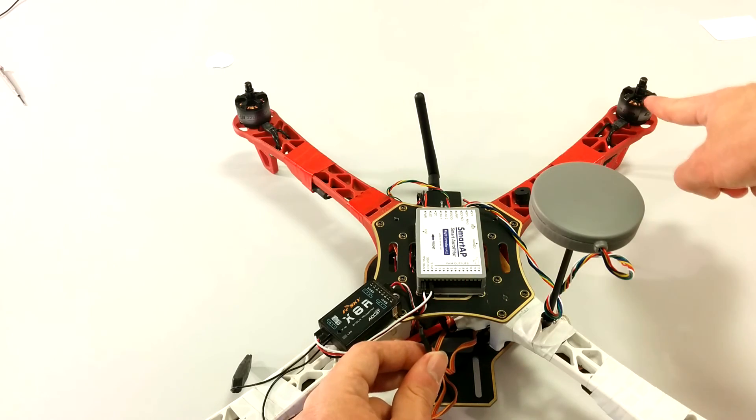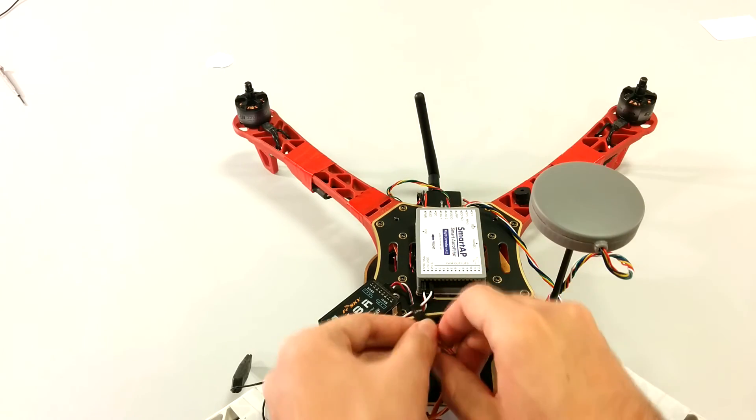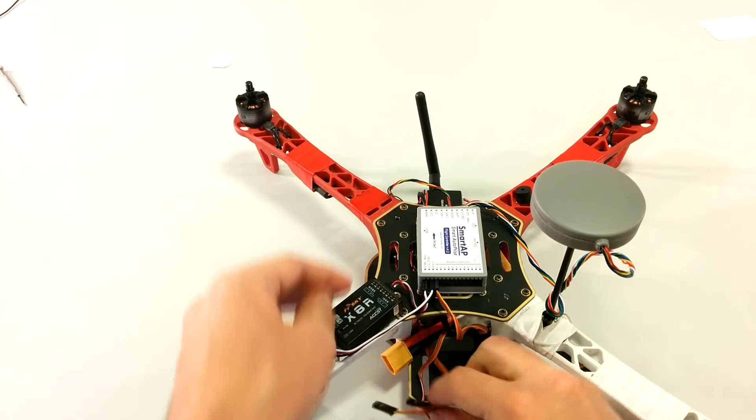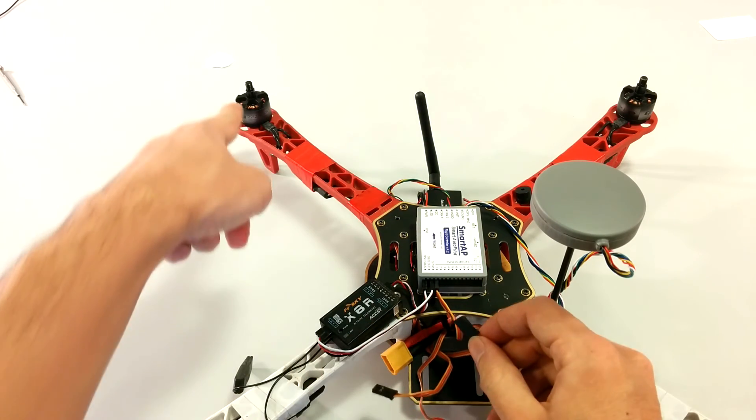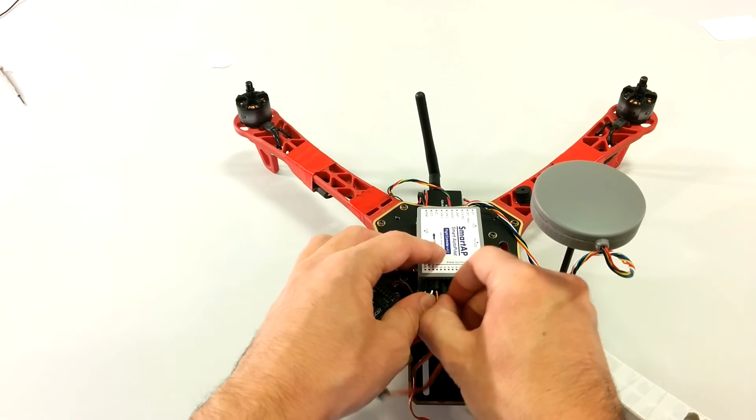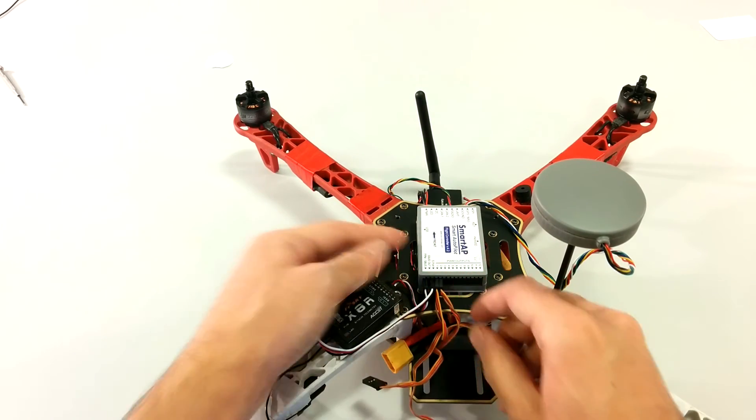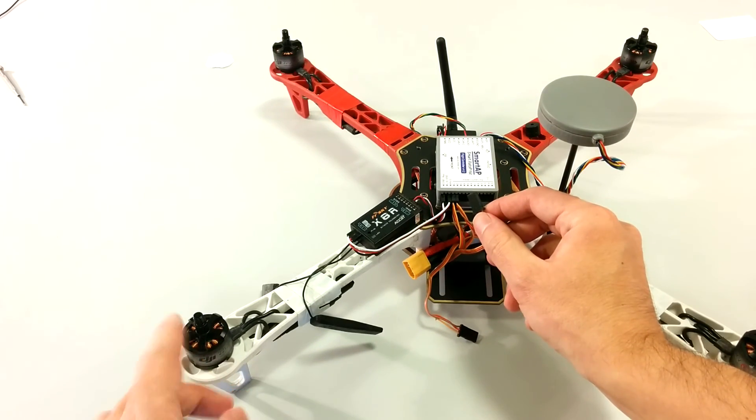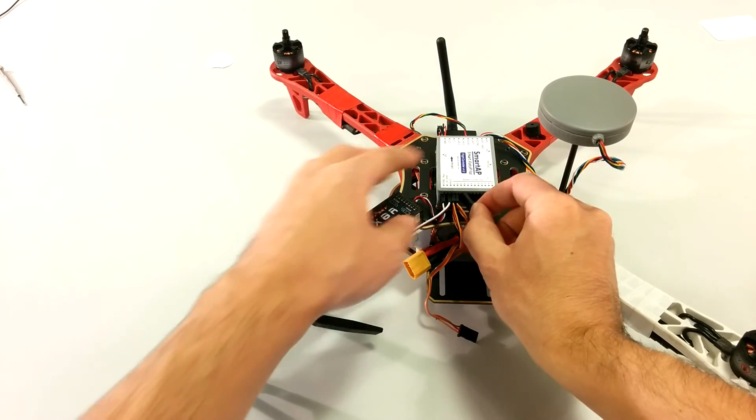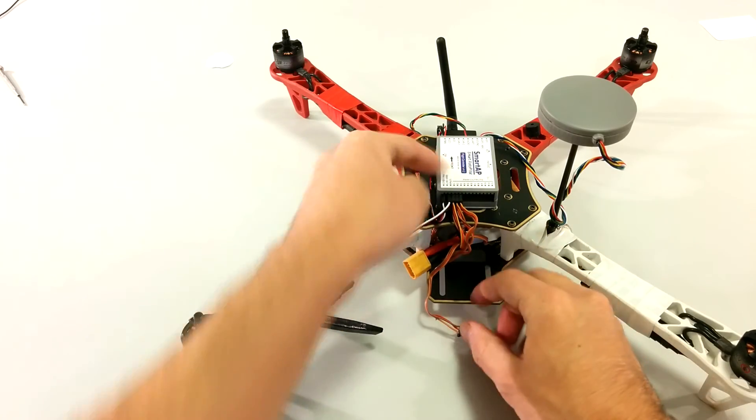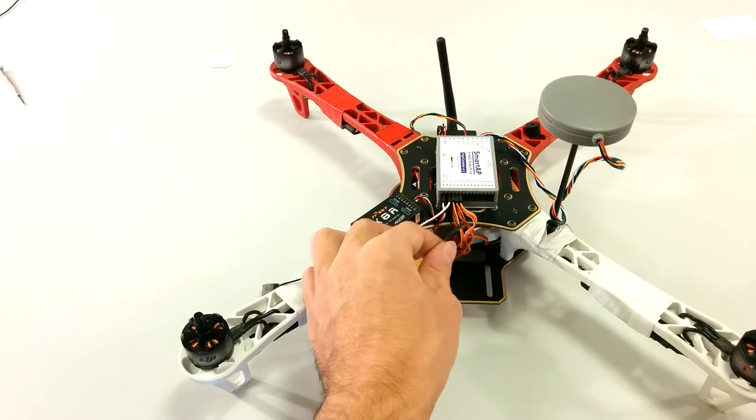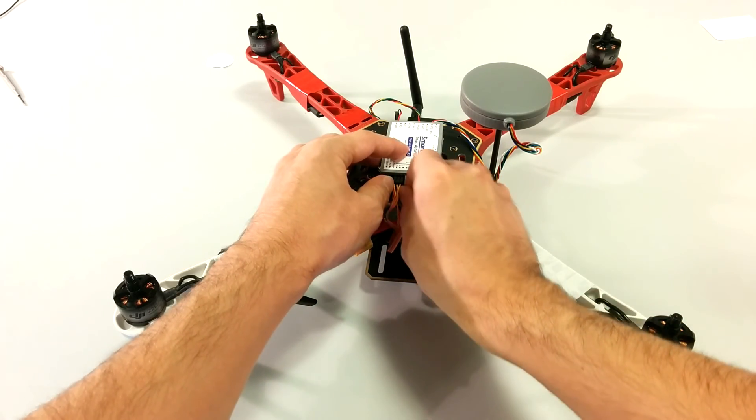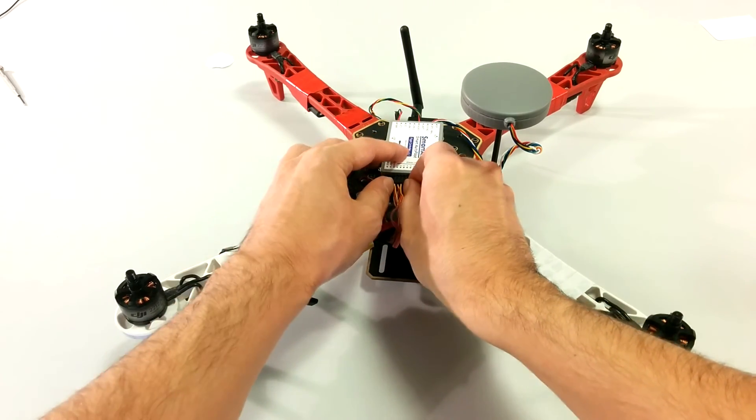Please connect the ESC wire of the first motor to PWM number 1 of the flight controller. PWM number 2 goes to the second motor. PWM number 3 goes to the third motor. And finally, PWM number 4 goes to the fourth motor.